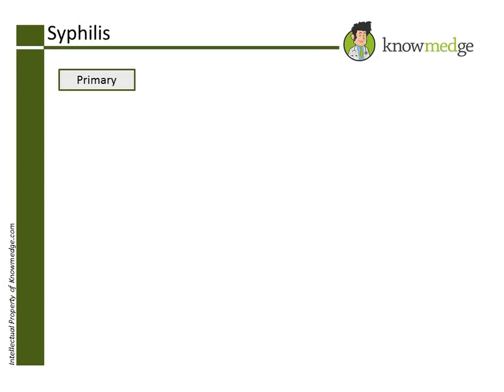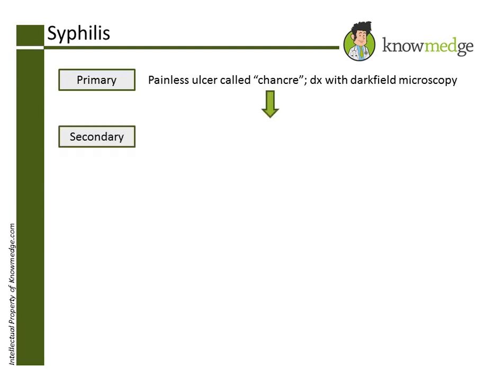Primary syphilis is associated with a painless ulcer called a chancre and is diagnosed with darkfield microscopy. Secondary syphilis is associated with lesions on the palms and soles that look like nickels and dimes, which makes choice E the correct answer.